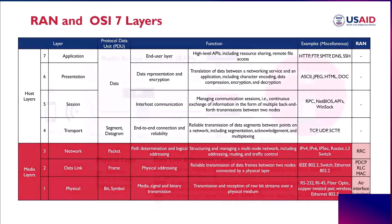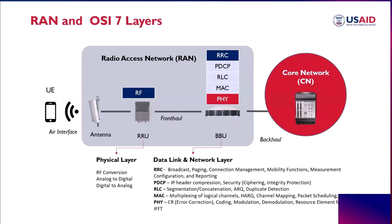Let's go back to the interconnection of the Radio Access components. The UE or user terminal is connected to the Radio Access Network, which then connects to the Core Network. Focusing on the Radio Access Network, there is an antenna system — it could be passive or active. Looking at the RF part, the RRU or Remote Radio Unit is where the Physical layer can be seen, as the Physical layer consists of RF conversion.